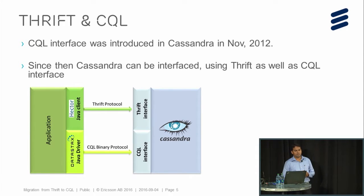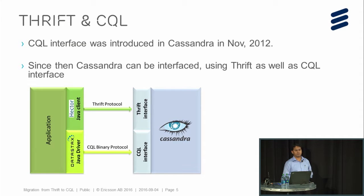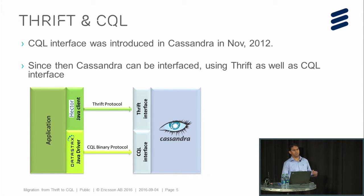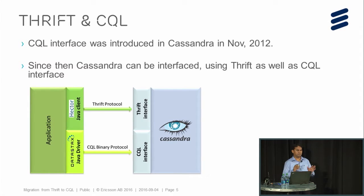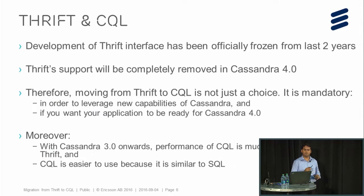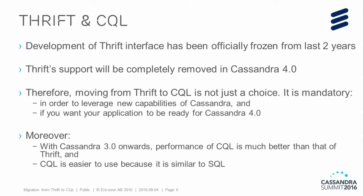The SQL interface was introduced in Cassandra in November 2012. Since then, Cassandra can be interfaced using Thrift as well as SQL. However, development of the Thrift interface has been officially frozen for the last two years, and Thrift support will be completely removed in Cassandra 4.0. That means moving from Thrift to SQL is not just a choice — it is mandatory in order to leverage new capabilities of Cassandra and to be ready for Cassandra 4.0.